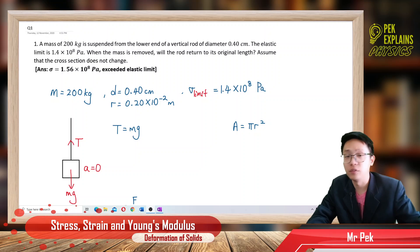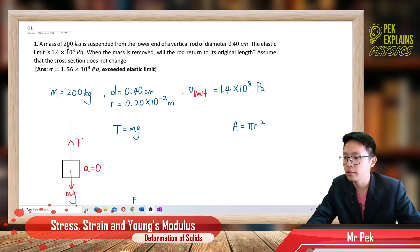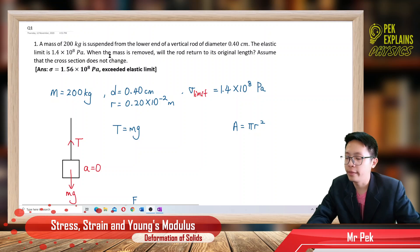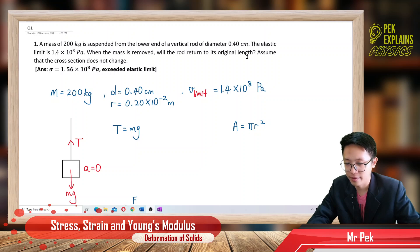This is the first question in deformation of solids. A mass of 200 kg is suspended from the lower end of a vertical rod of diameter 0.4 cm. The elastic limit is 1.4 × 10⁸ pascal. When the mass is removed, will the rod return to its original length? Assume that the cross-section does not change.